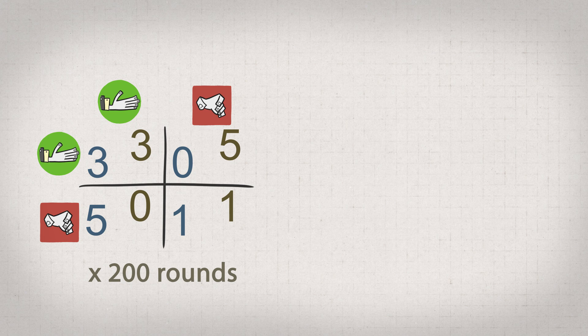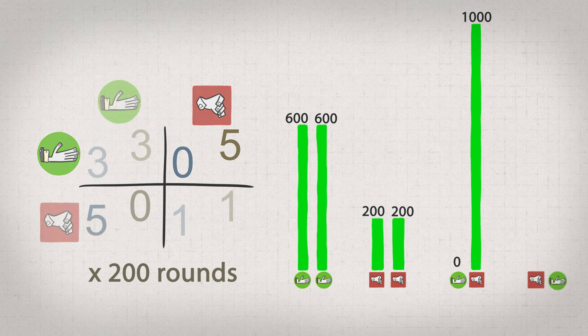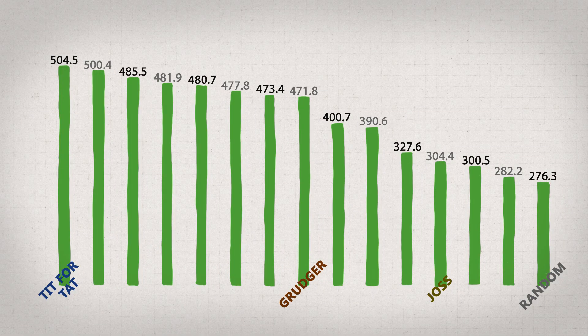These were the payoffs. So if two strategies cooperated with each other for all 200 rounds, they would each get 600 points. If they both defected, they would both get 200 points. If one cooperated and the other defected the whole time, one would get 0 and the other 1000, the highest and lowest possible scores. If they went back and forth like this, they would each get 500. And these are the averaged results of the tournament.